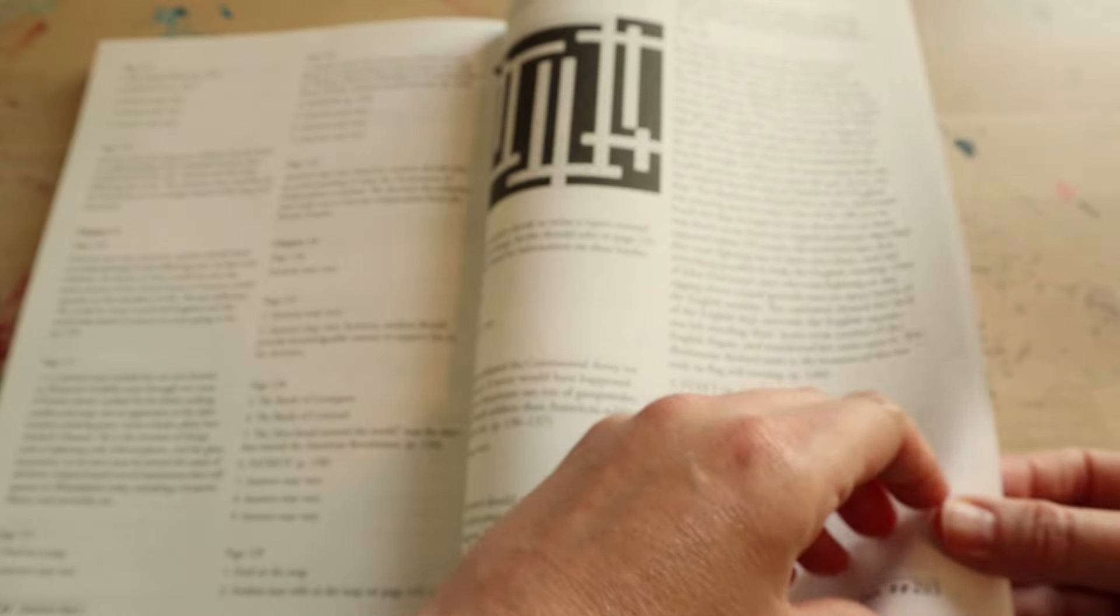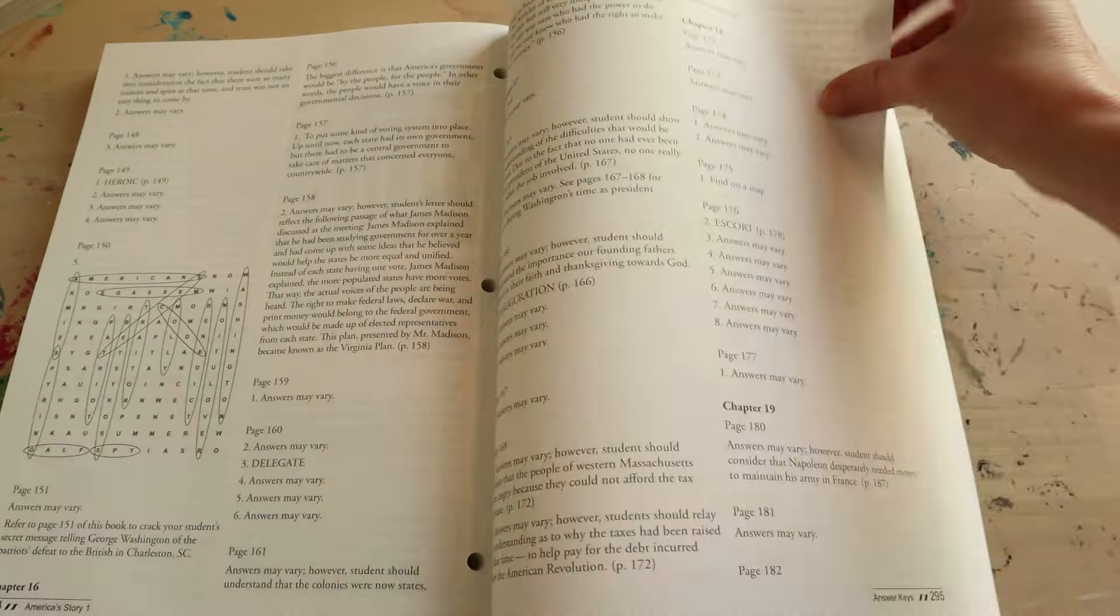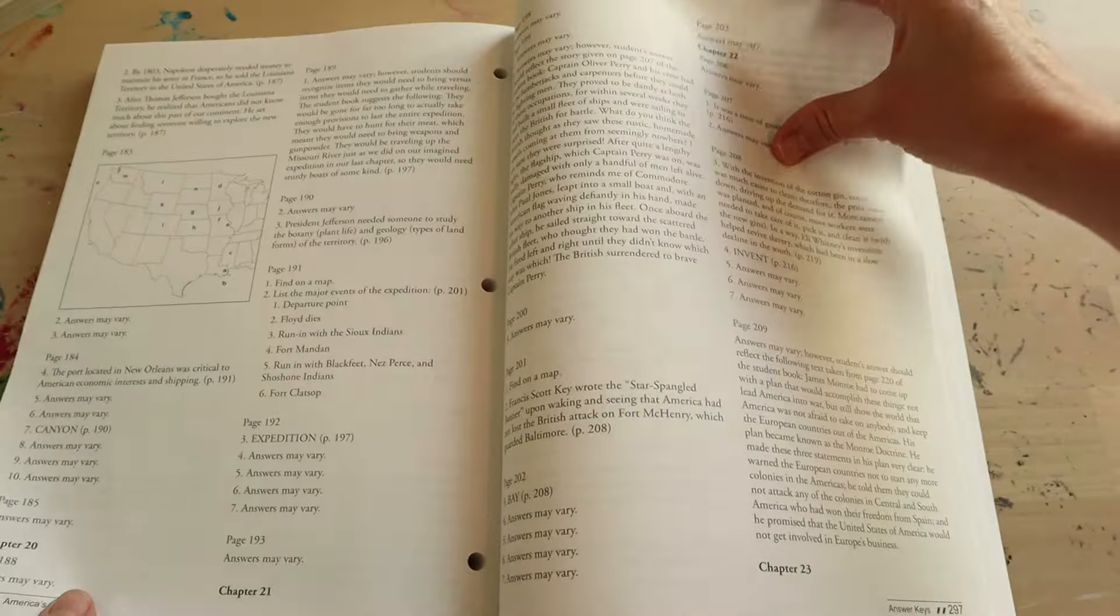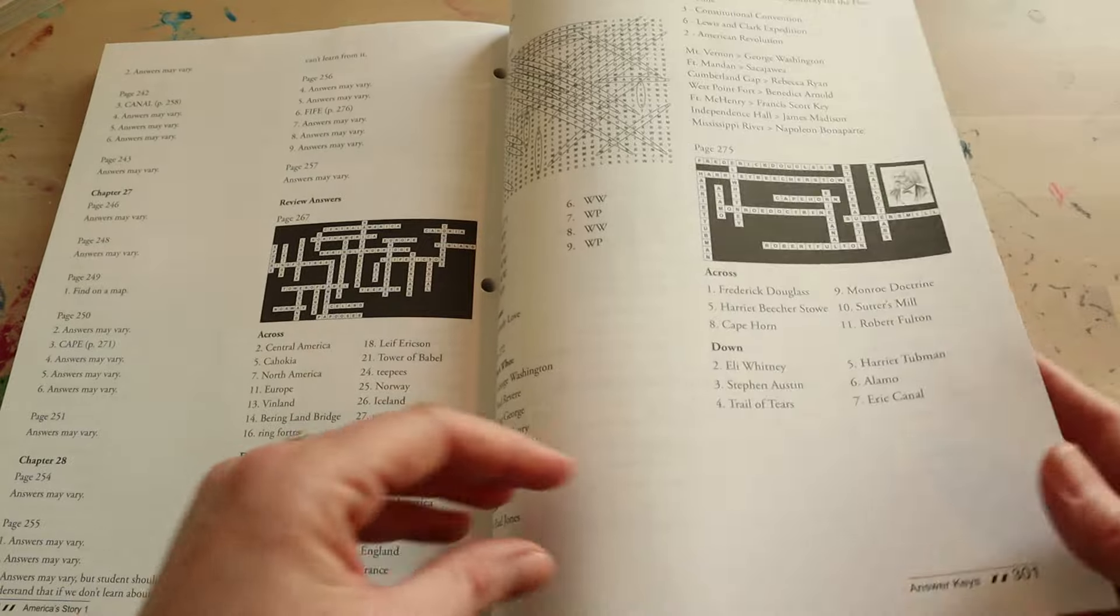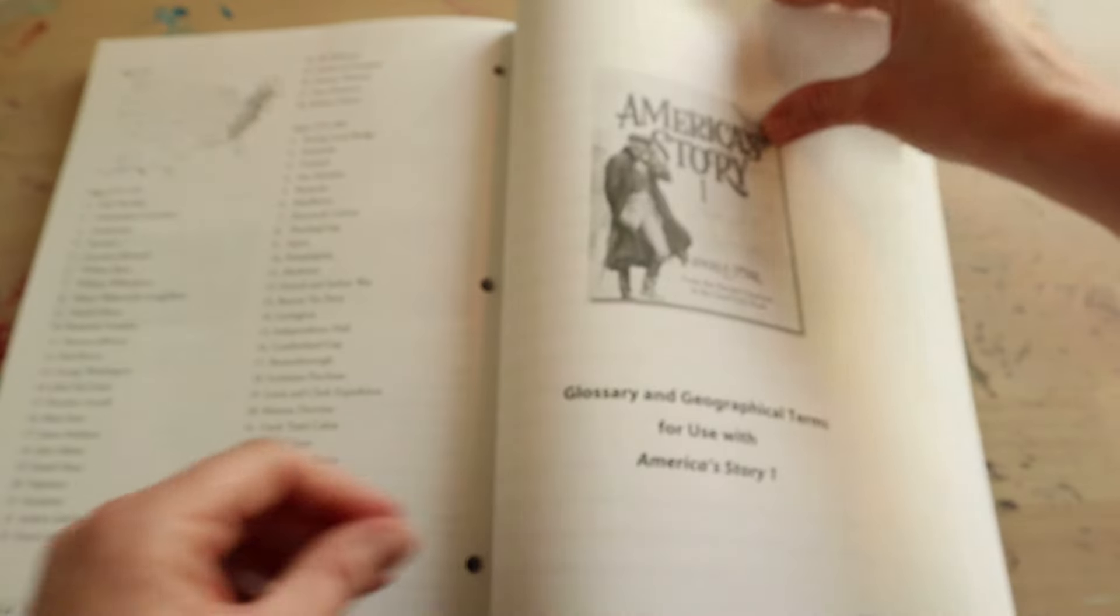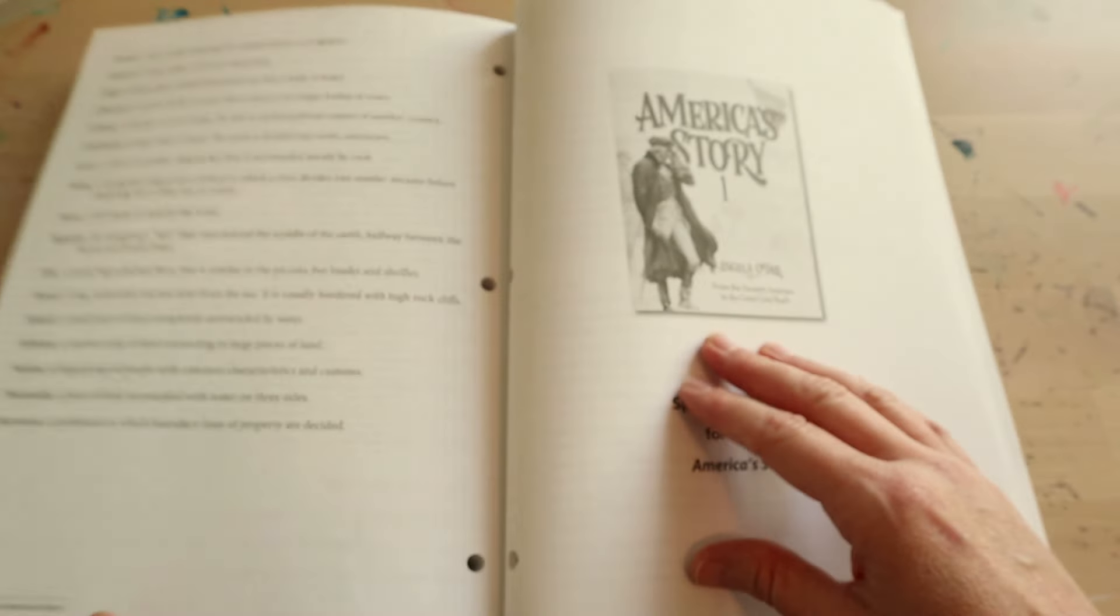They can also create a flag for the family. They can pretend to be spies and crack one of the codes that they learned how to do. They can practice finding things in nature that they've never seen before. They can act out the story of the Louisiana purchase. They can learn the star-spangled banner. They can pan for gold and make butter and just so much more. This is a very engaging curriculum.